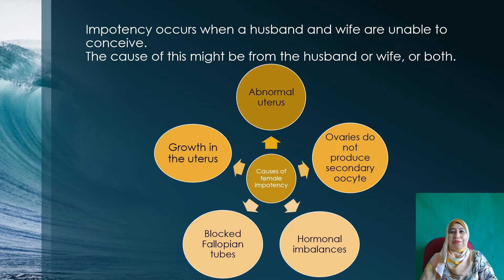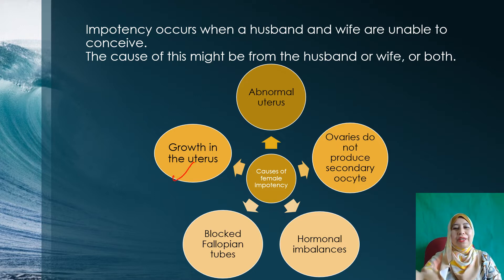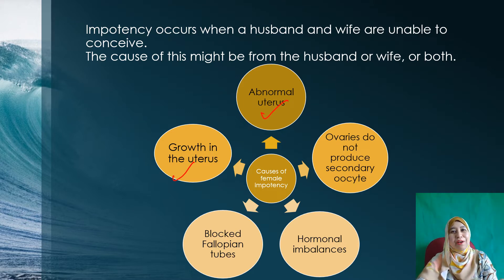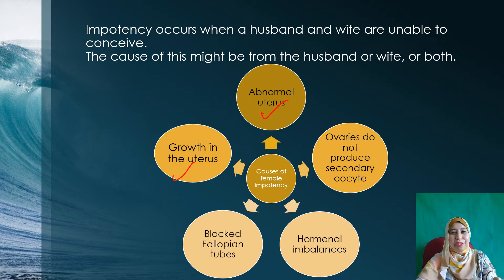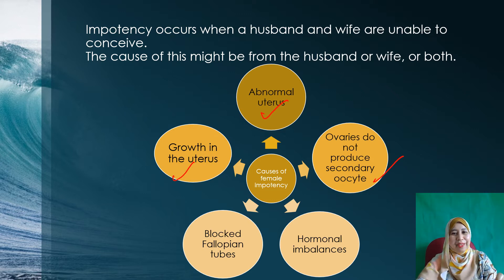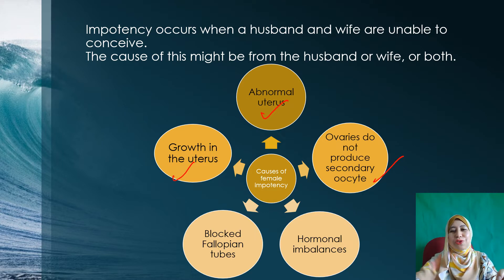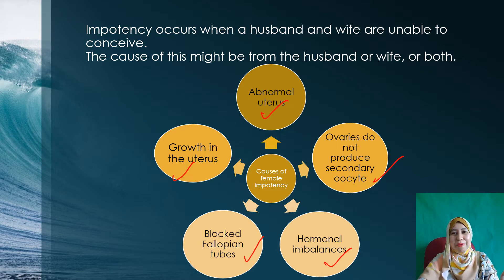The causes of female impotency: the first reason may be there is a growth in the uterus. The second reason may be due to an abnormal uterus. The third reason, the ovaries may not produce secondary oocyte. The fourth reason is hormone imbalances, the same as in male impotency. And the last reason, the fallopian tube of the wife may be blocked.